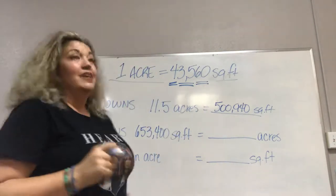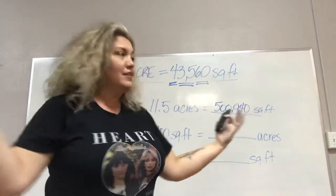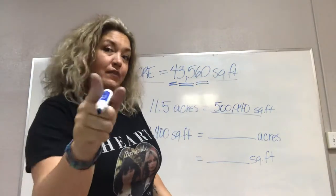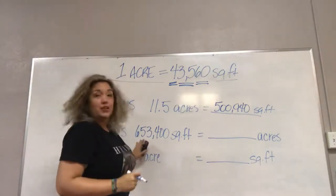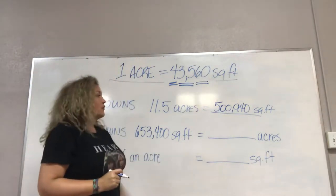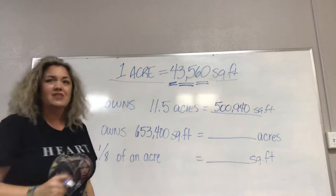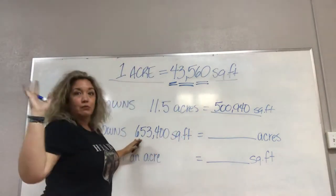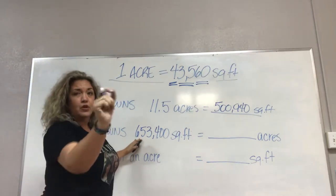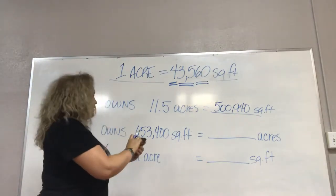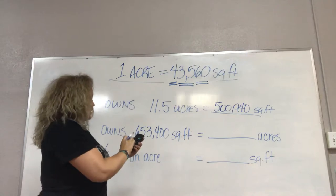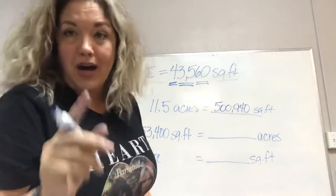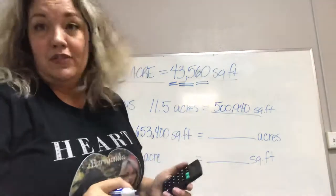Now our second question is going from the big square feet down to the small acre number, so we're going to divide. So we're going to divide 653,400 square feet, which is what the farmer owns. How many acres now does he own? So going from big number to a small number, we're going to divide 653,400 and we're going to divide it by 43,560.